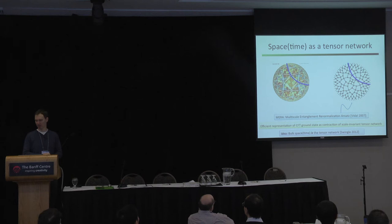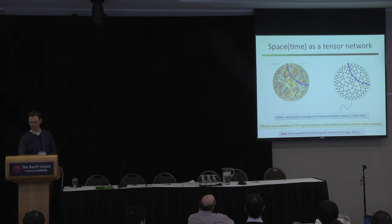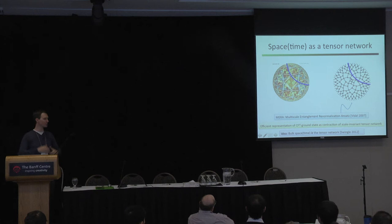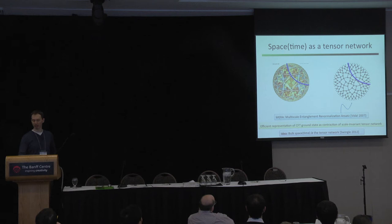Back in 2012, Brian Swingle had a proposal building on ideas from the quantum information community. Many people in the room are probably familiar with MERA. If you have a state on a ring that has conformal invariance — representing the system at a phase transition — Guifré Vidal back in 2007 was trying to find a concise way to write down that state. The Hilbert space grows exponentially with the number of qubits, so Vidal proposed an ansatz: write the state as the contraction of a tensor network.